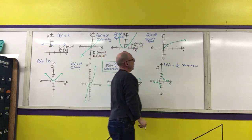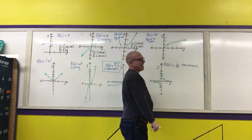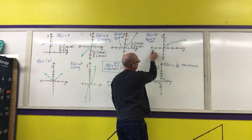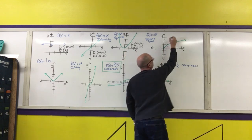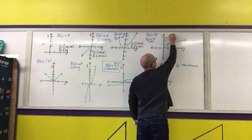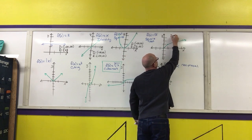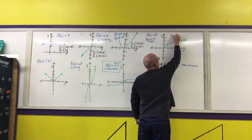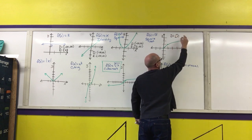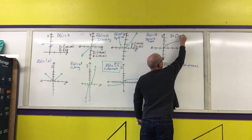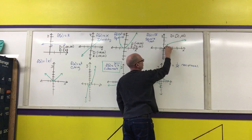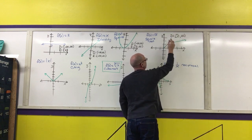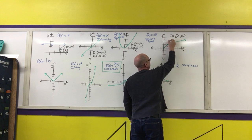The square root function is not a polynomial function. Its first x-value is zero, so the domain starts at zero and goes to positive infinity, [0, ∞). Similarly, the range also starts at zero and goes up to positive infinity.